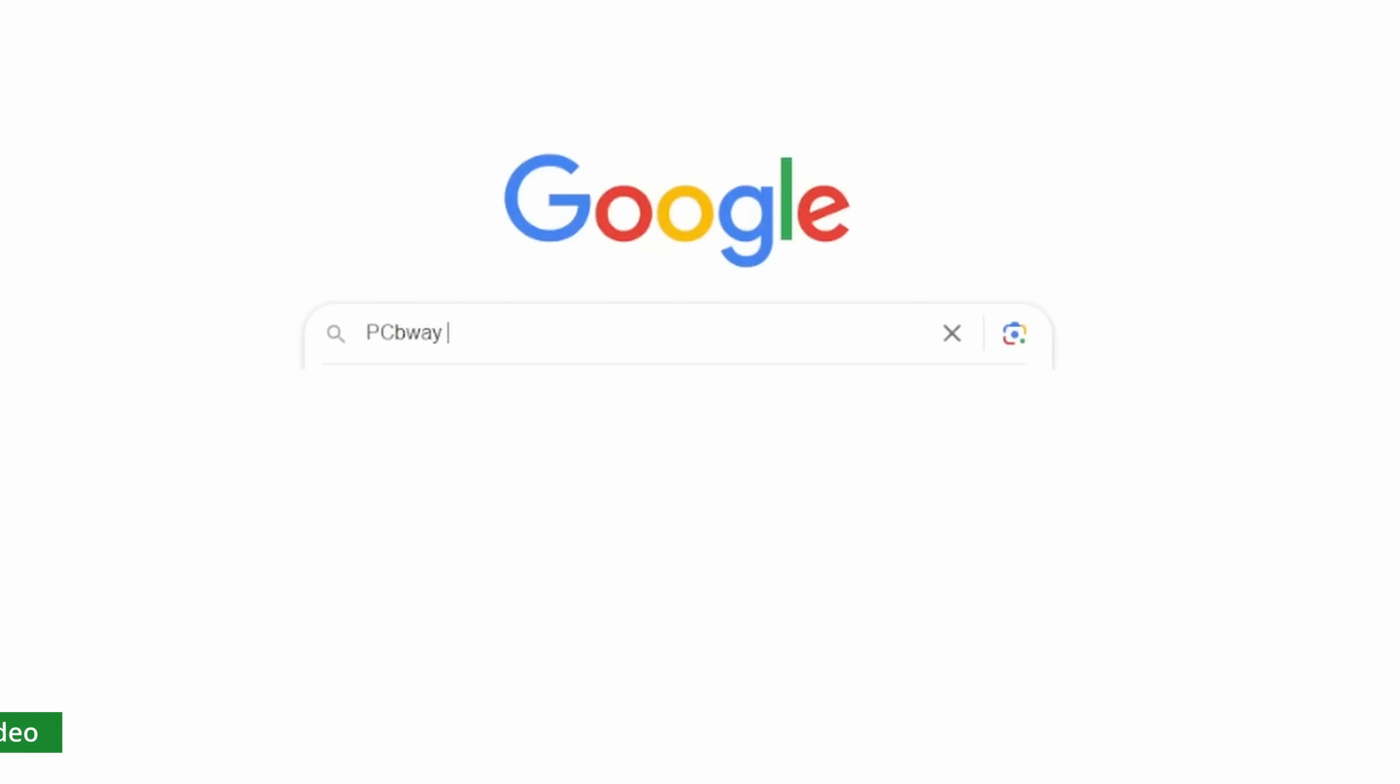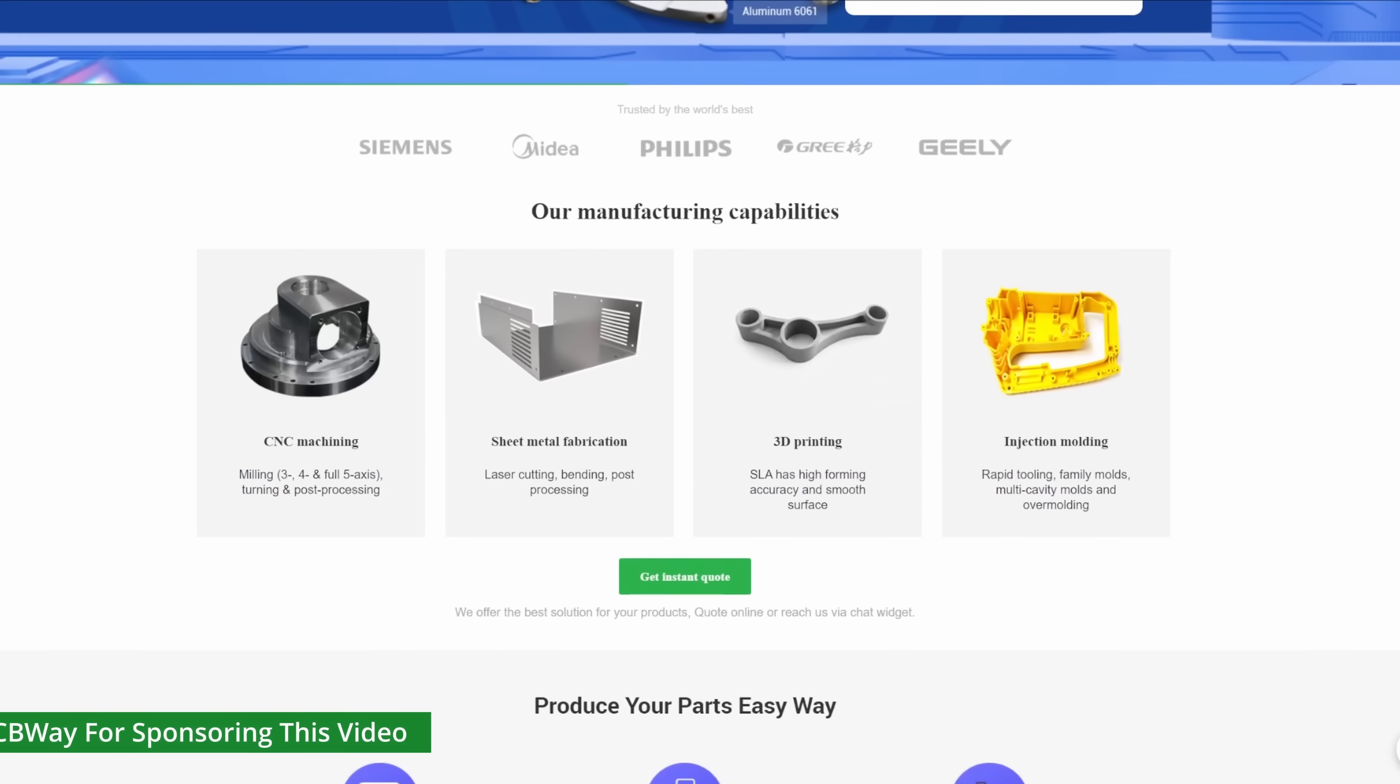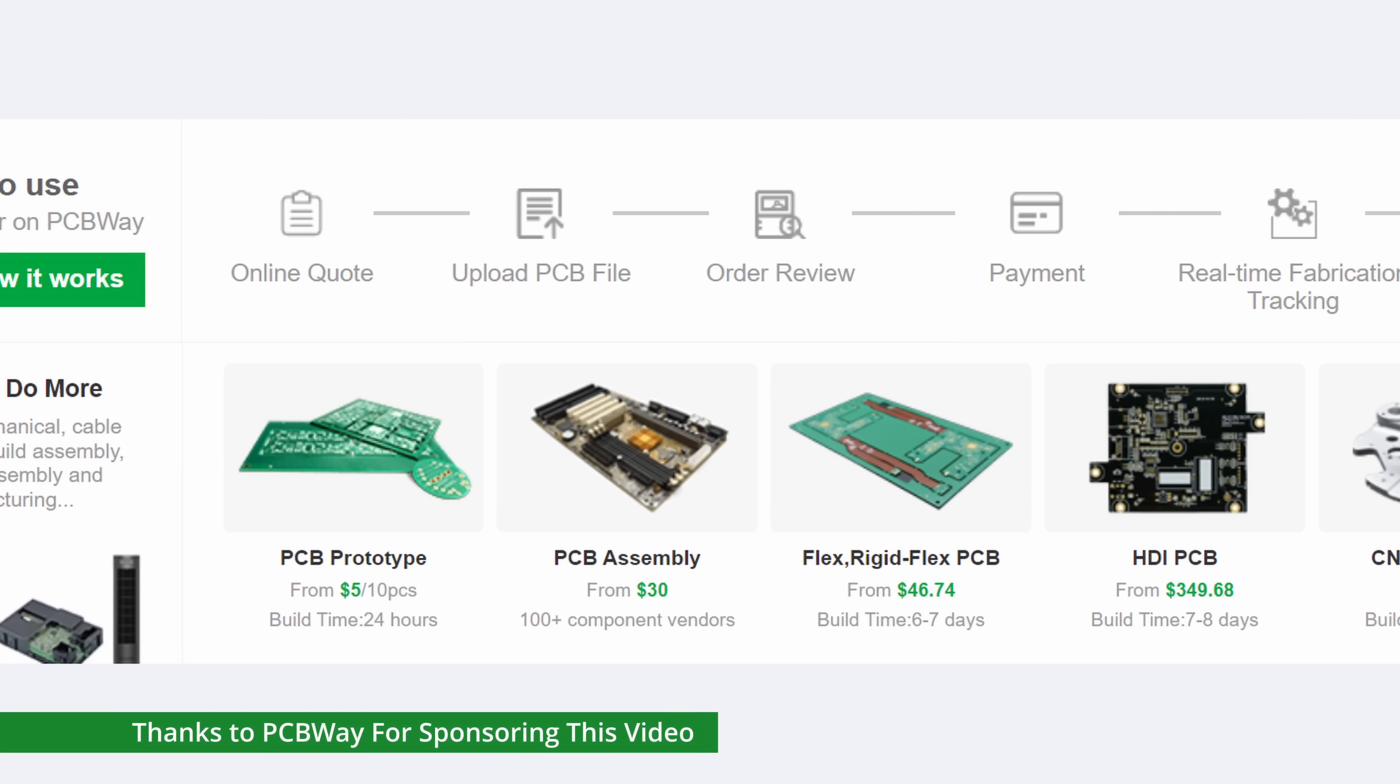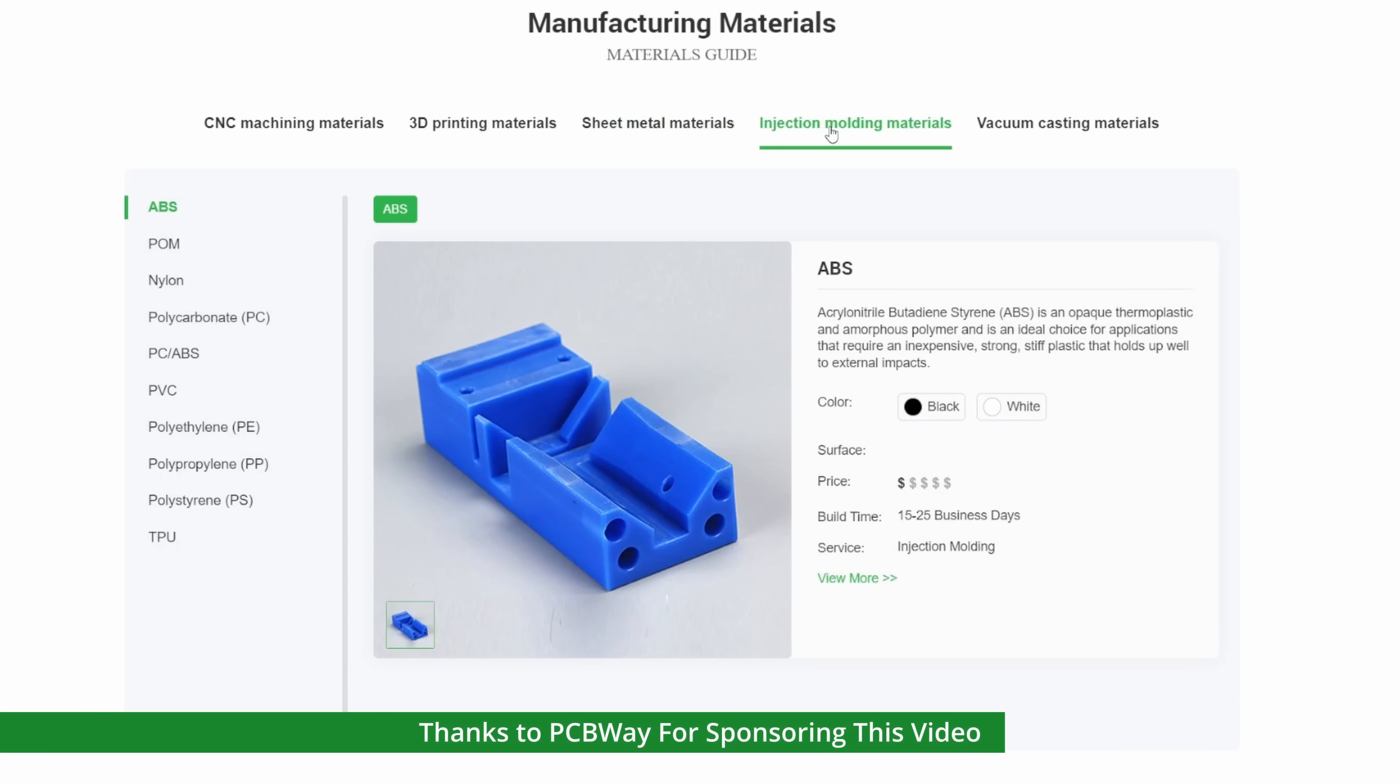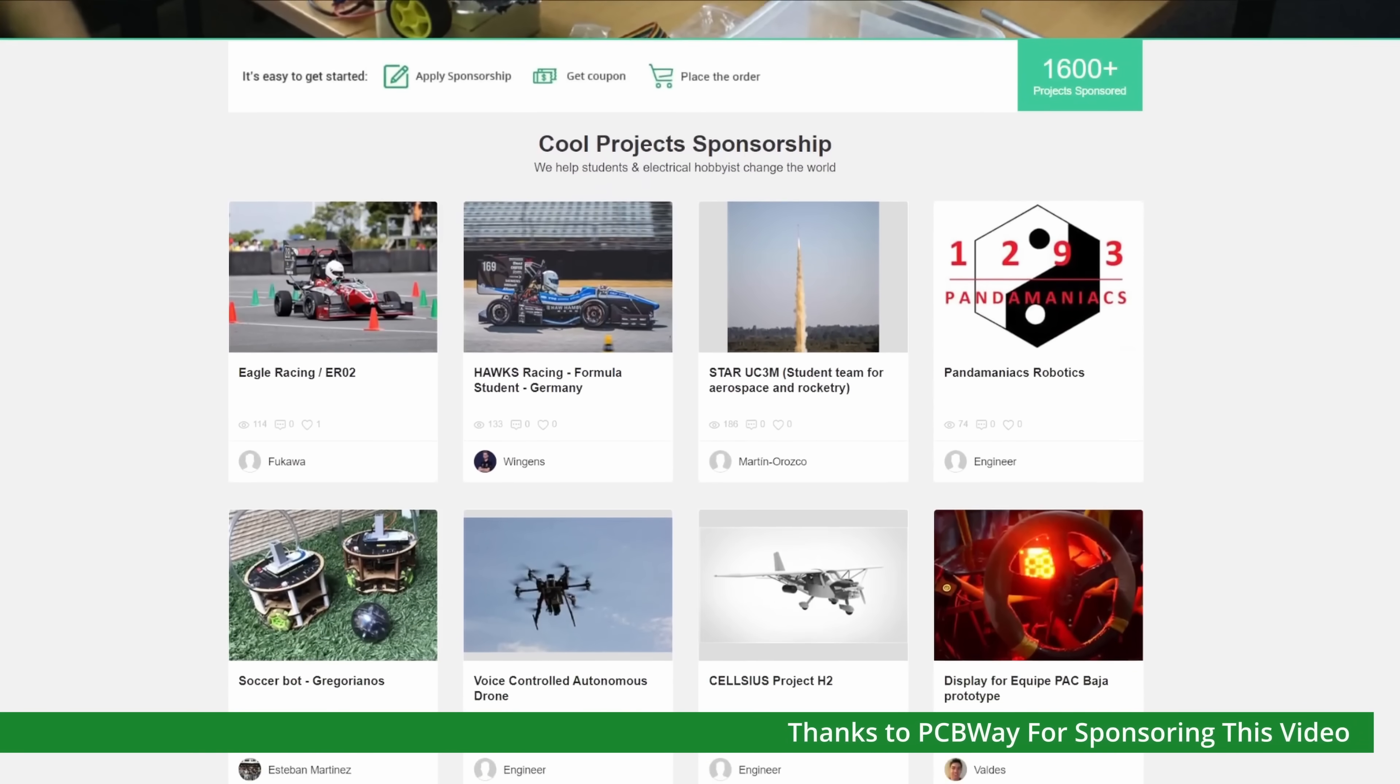This section is sponsored by PCBWay who you may already know for their high quality manufacturing and assembly service for PCBs, but did you know they also do sheet metal fabrication, CNC machining, injection molding and 3D printing. All you have to do is upload the files you want manufactured, select the parameters and materials, and you'll automatically be provided with design for manufacture feedback and a quote. They also provide sponsorship for non-profit and educational projects so check them out via the link below at pcbway.com.